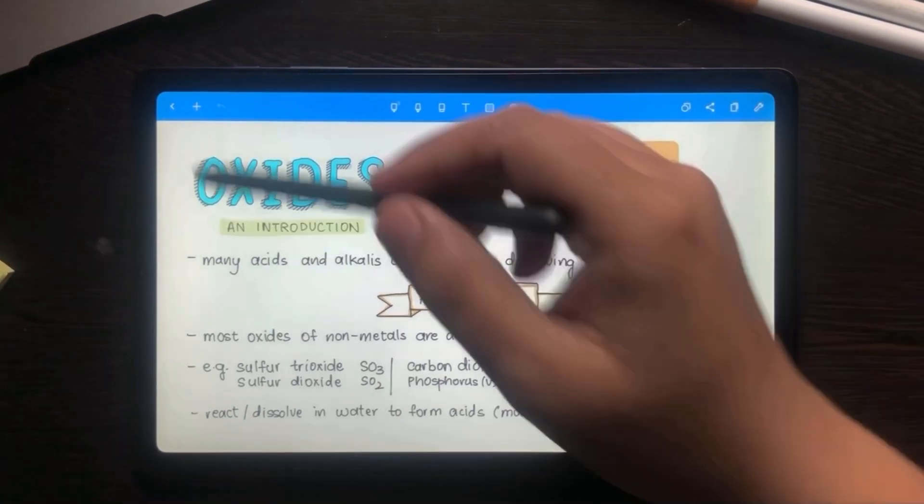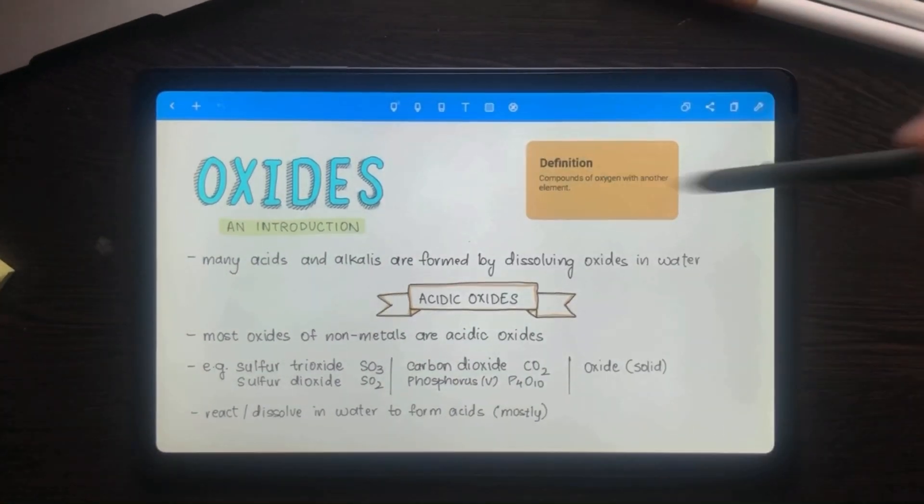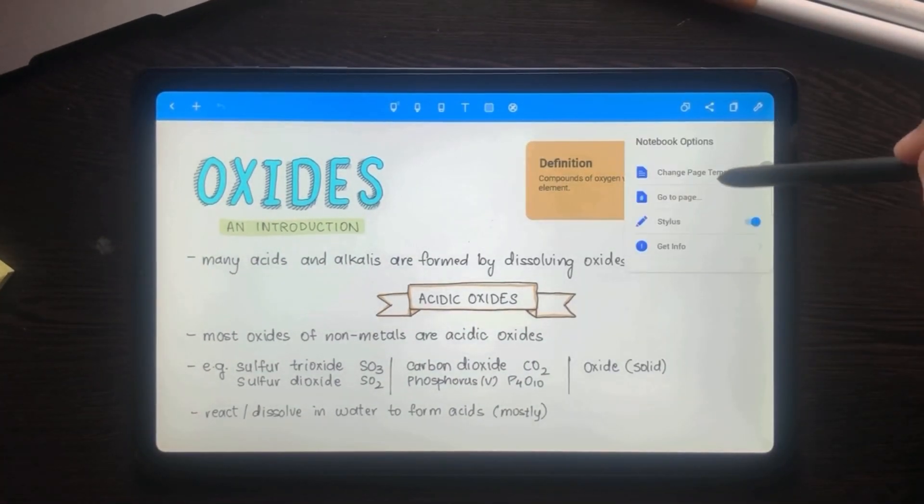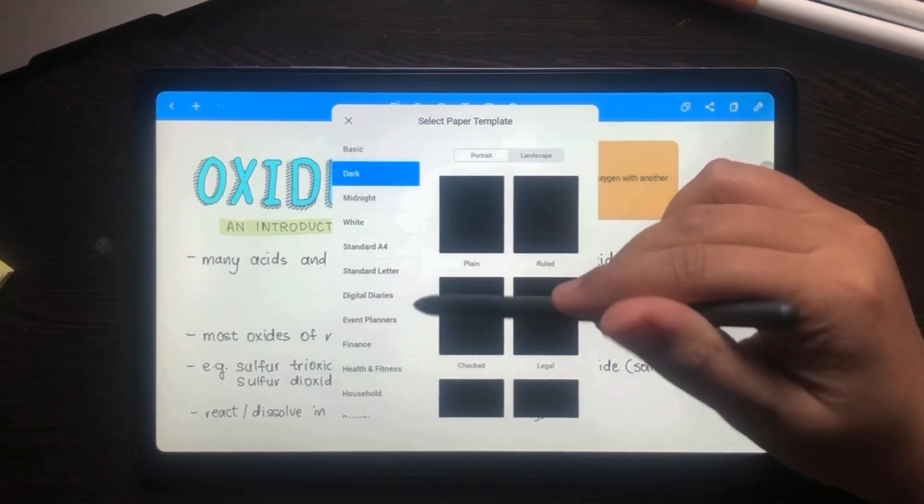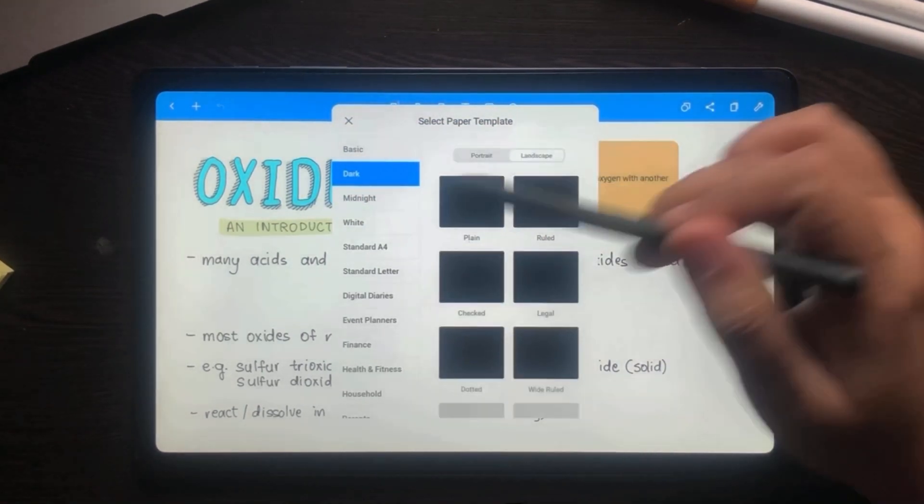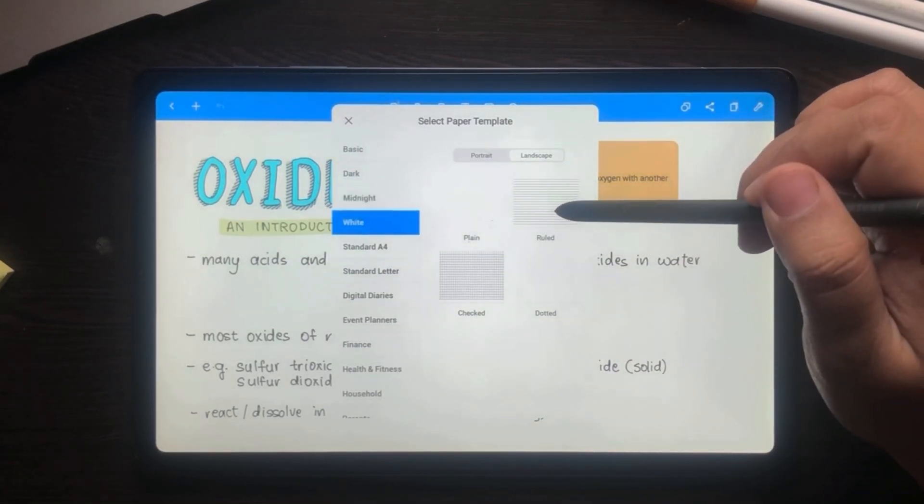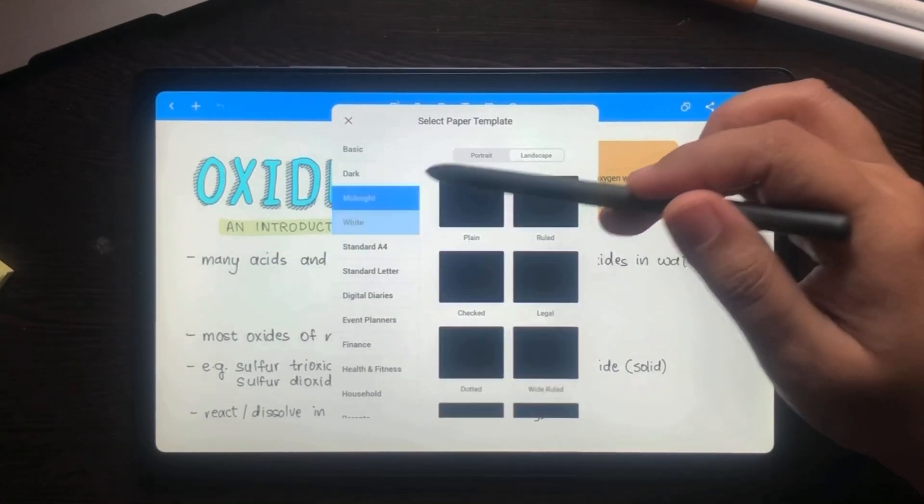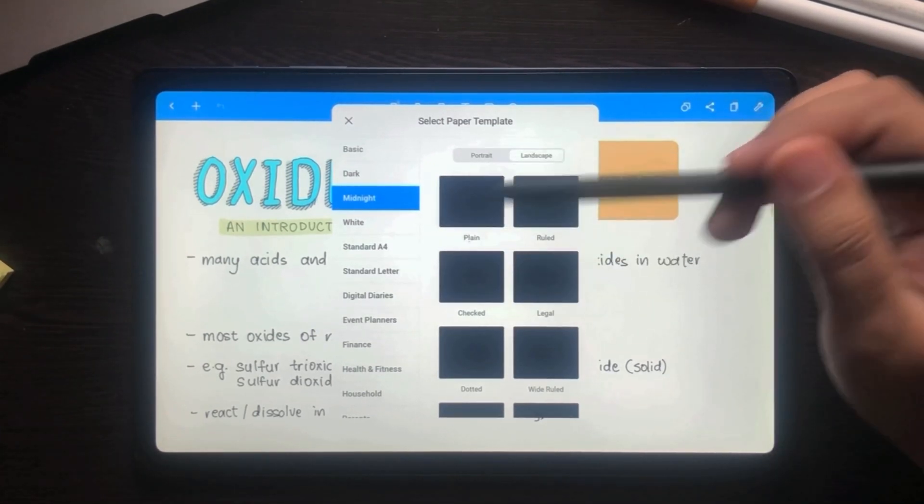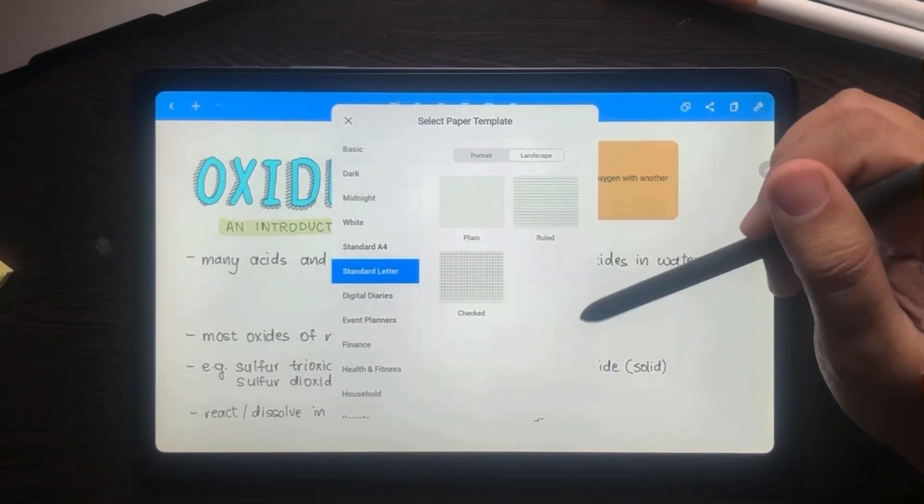I'll show you what exactly happens. So here I'm just going to go ahead and change my page template. Right now it's in landscape mode, so I'll probably change it to something else, maybe I'll change it to a different form of landscape template, maybe I'll change it to white, or no, maybe I'll change it to standard letter.